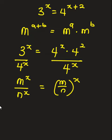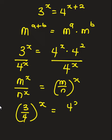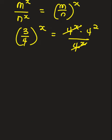Now from here, we can say this will be 3 over 4, all raised to the power x, is equal to 4 raised to the power x times 4 squared over 4 raised to the power x. The 4^x terms cancel out, giving us 3 over 4, raised to the power x, is equal to 4 squared, which is 16.